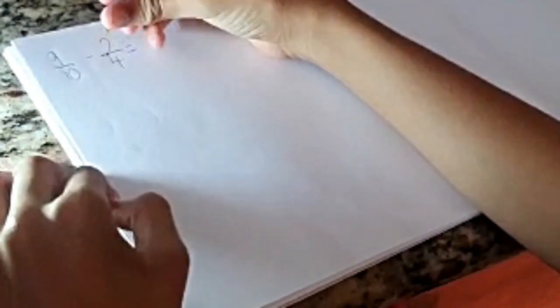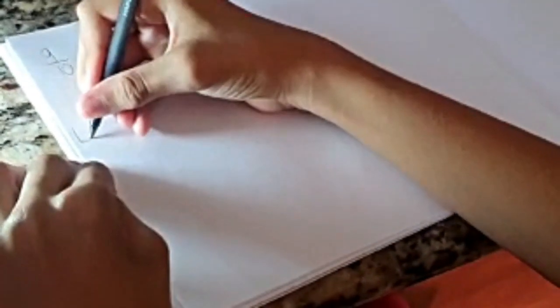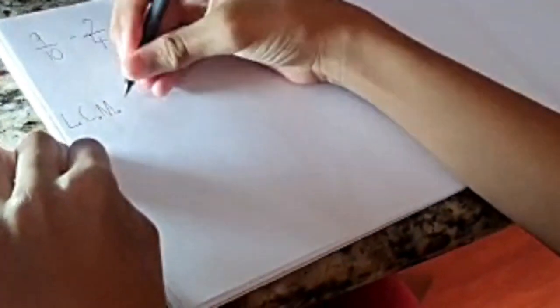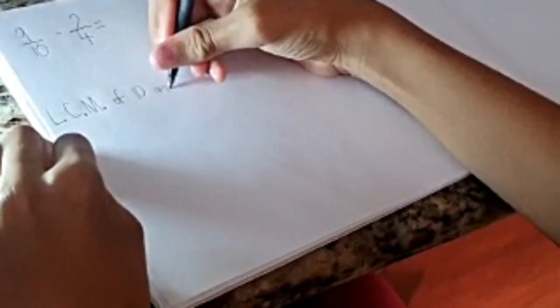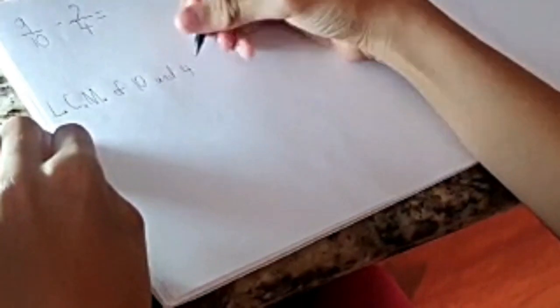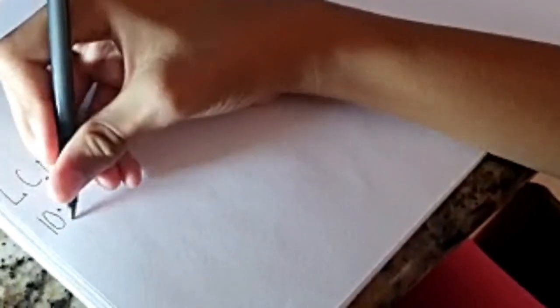As usual, we will find the LCN of 10 and 4. We are going to use 4 or 5 multiples. In this case, we are going to use 4 multiples.